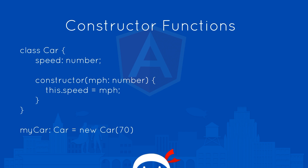We can also use constructor functions in classes when we're passing in data to the class. For example, we want to make a new instance of this Car class, and we want each car to have a different speed. So we can pass that speed into the parentheses when we create a new car. It's taken in by the constructor function within the Car — you can see right here it's taking a variable miles per hour, which is of type number. Then we're saying this.speed equals miles per hour, whatever we're passing in. We've already declared speed up here to be of type number, so this property on this instance of the car will be assigned the value 70.